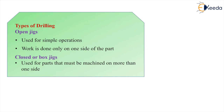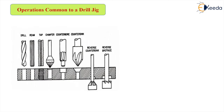The types of drilling jigs used are open jigs and closed or box jigs. Open jigs are used for simple operations where work is done on only one side of the part. Closed or box jigs are used for parts that must be machined on more than one side. Operations common to the drill jig include: drilling, reaming, tapping, chamfering, counter-boring, countersinking, reverse sinking, and reverse spotfacing. For all these operations we can commonly use a jig.